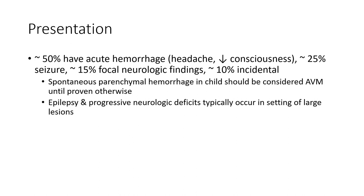Around 50% have acute hemorrhage at presentation with decreased level of consciousness, around 25% cause seizures, and 15% present with progressive neurological deficit. A finding of spontaneous parenchymal hemorrhage in a child should be considered AVM until proven otherwise. Epilepsy and progressive neurological types occur in the setting of smaller lesions.